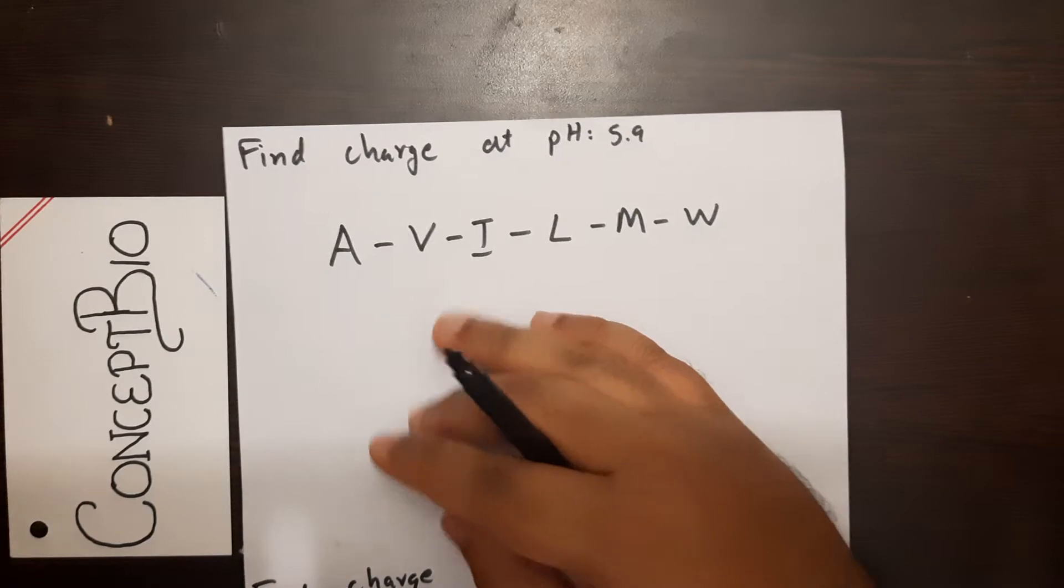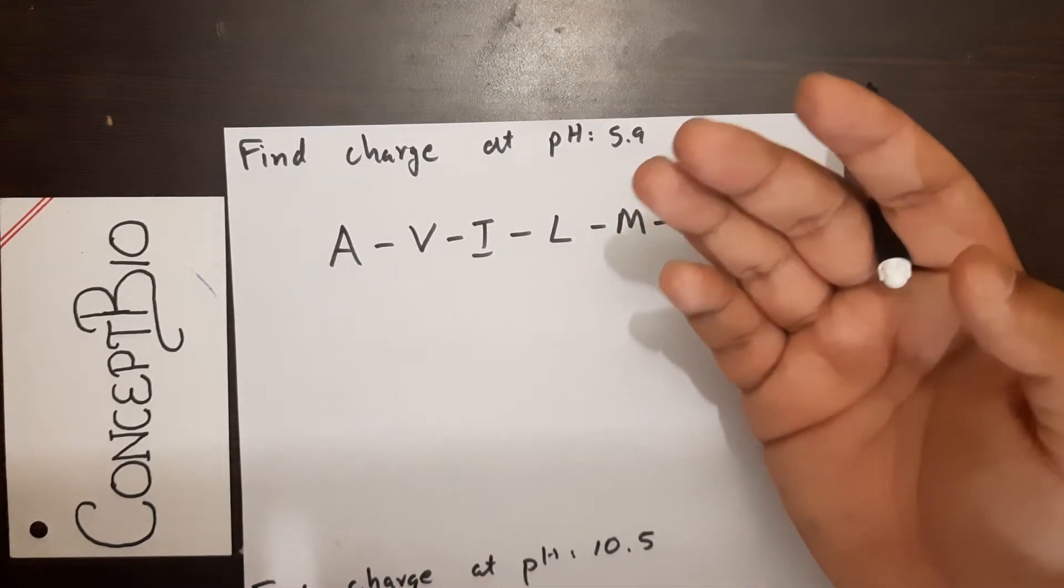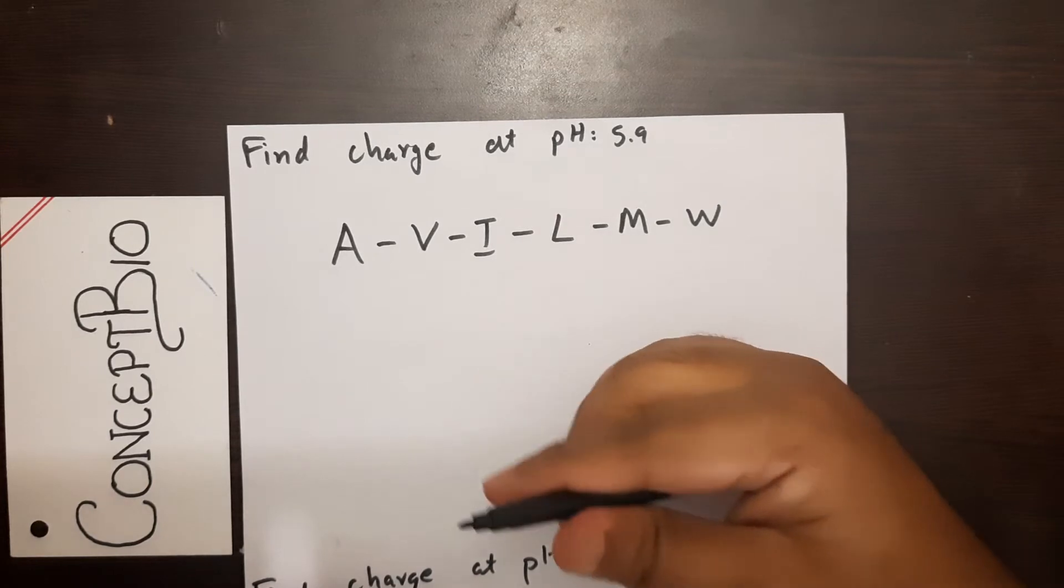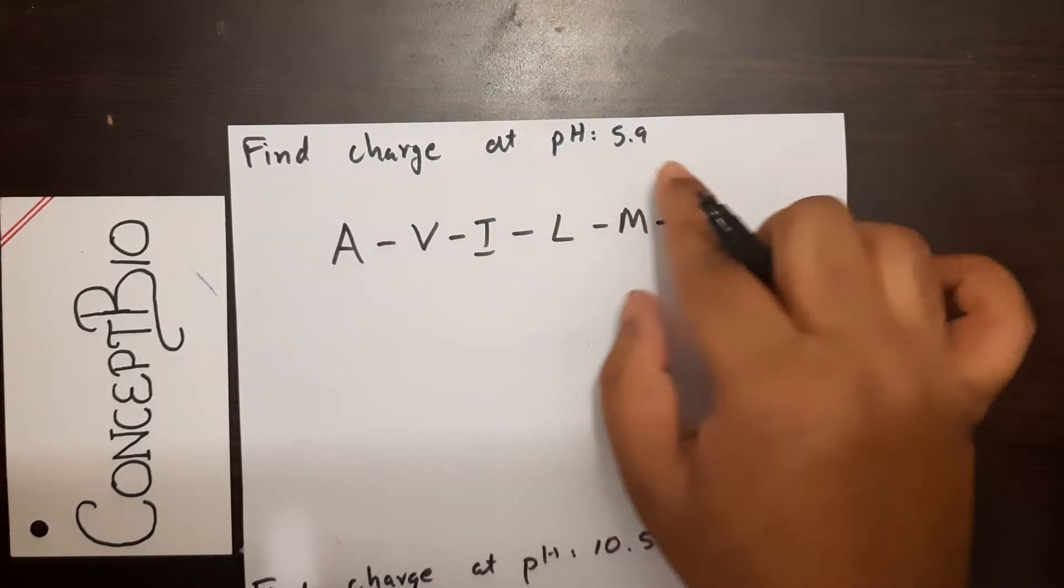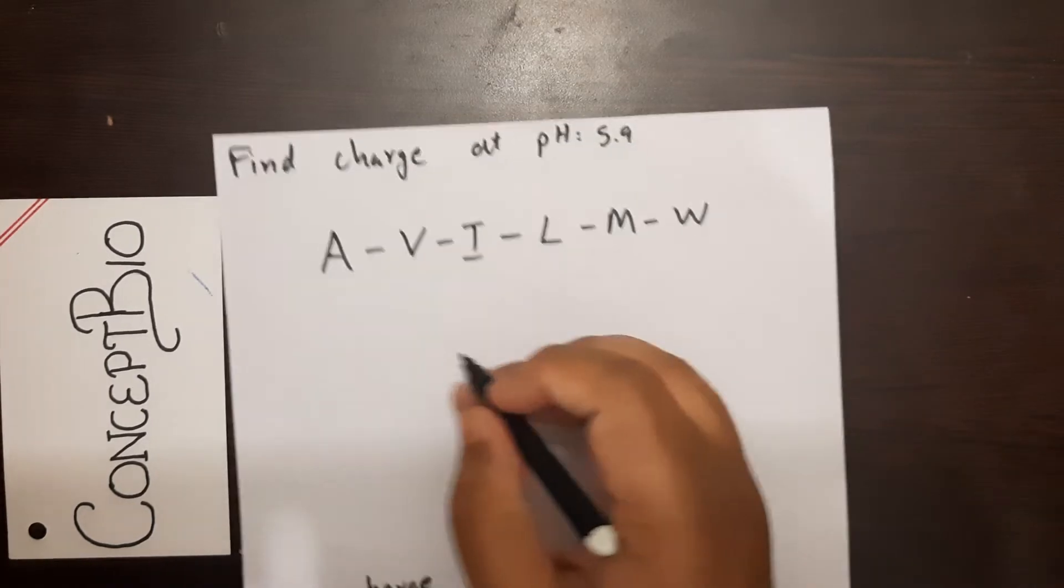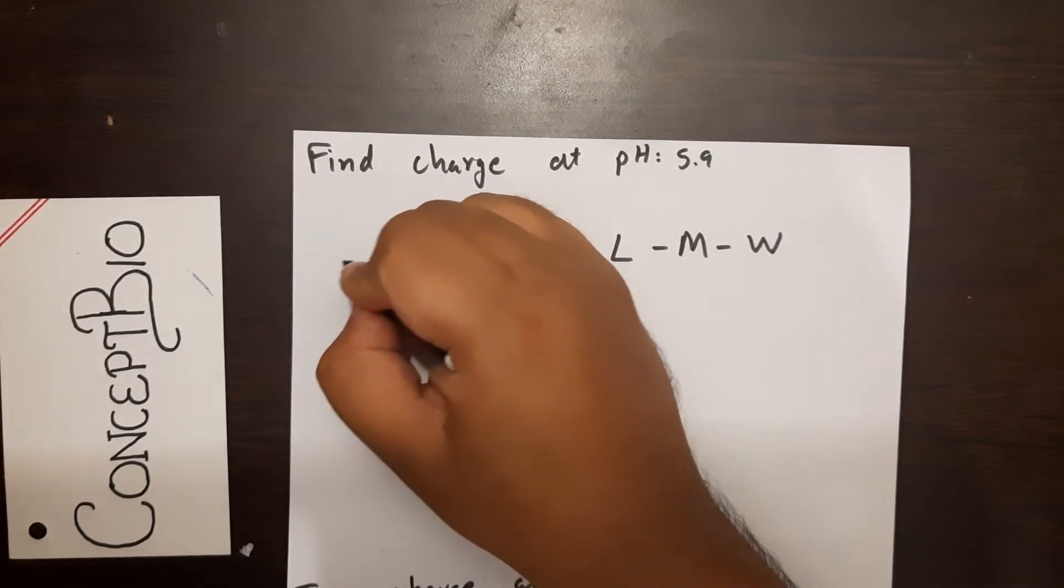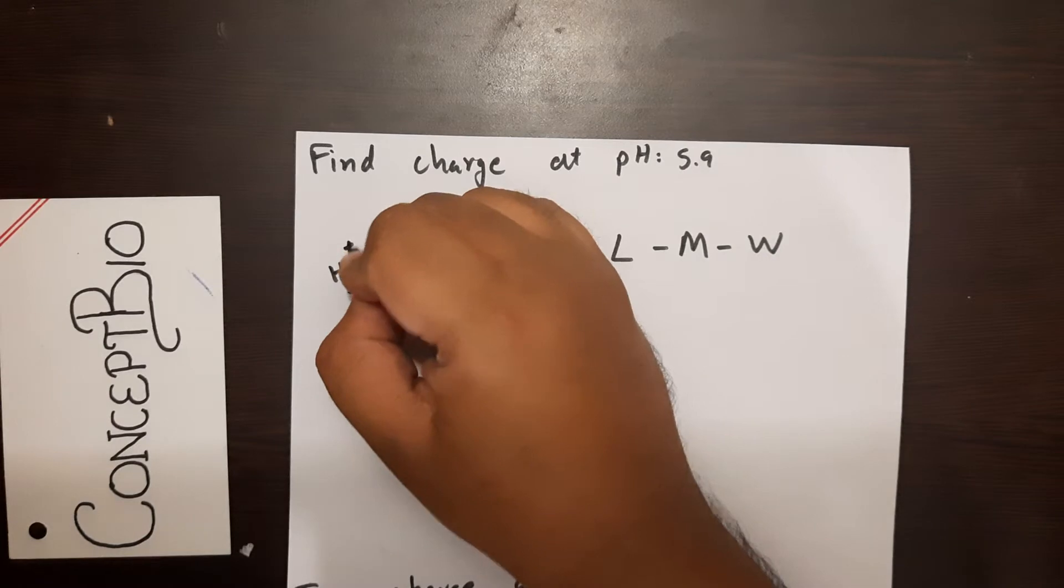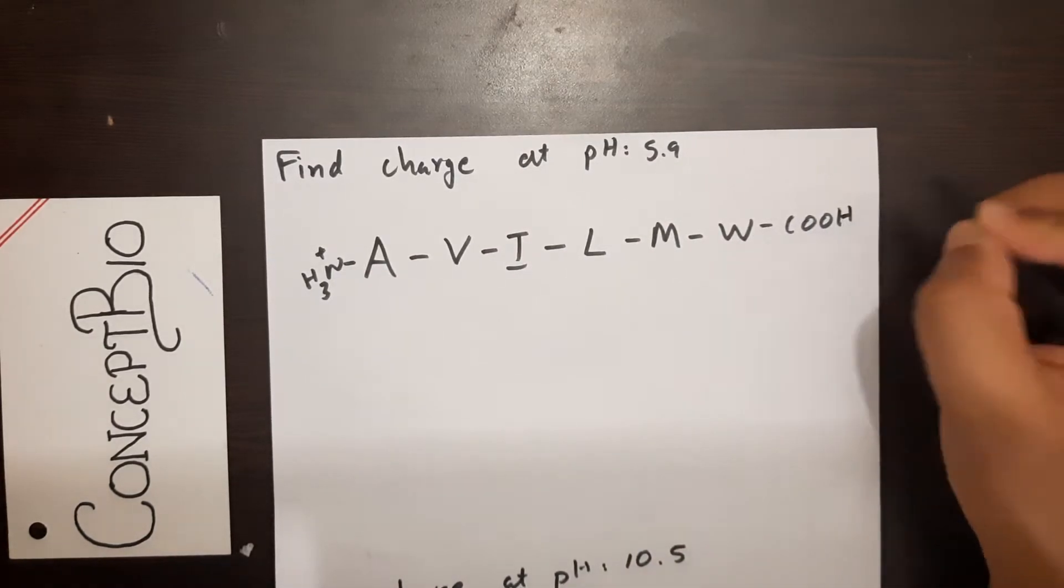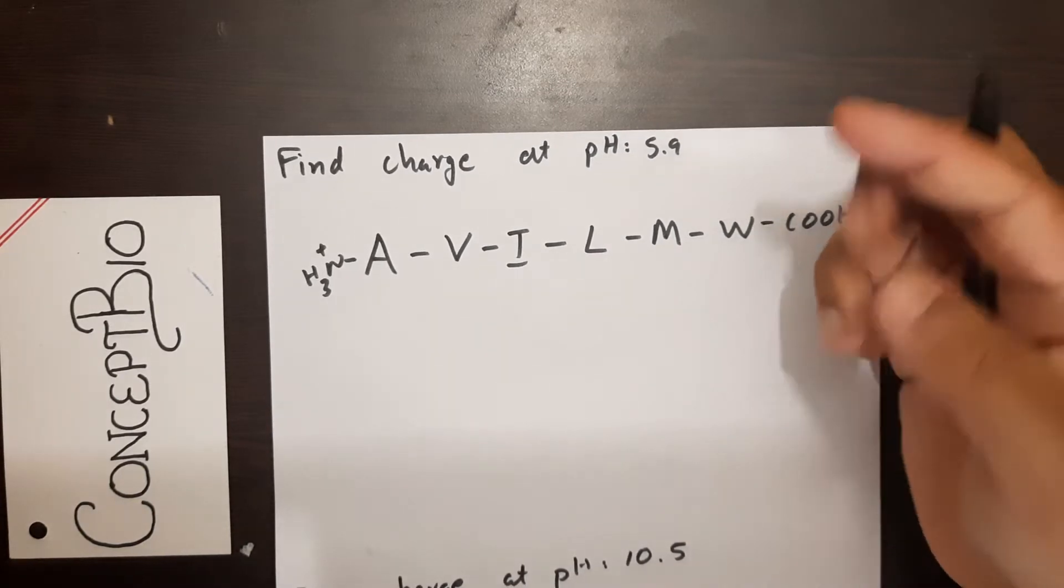You can learn more about it from my previous video linked here. Now let's get into the question. To find the charge at a pH for any amino acid polypeptide chain, start by drawing out the terminal ends: the NH3 positive terminal on the left side and the carboxyl terminal on the other side.